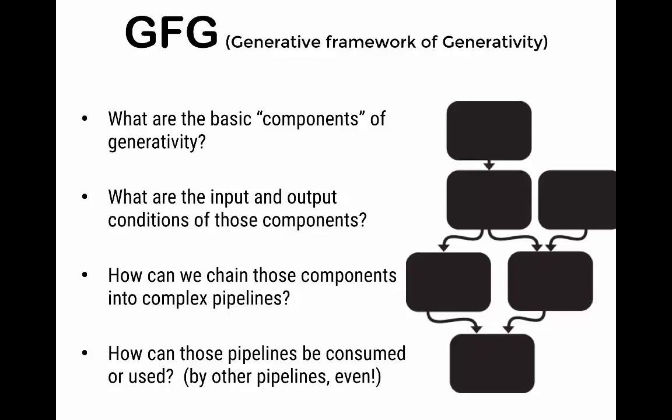So some of the things I was thinking about were what are the basic components of generativity? What are the inputs and output conditions of those components? And then most importantly, how do we chain those components together into complex pipelines? What are the basic LEGO pieces of generativity? And then once we have these pipelines completed, once we have a pipeline that takes one kind of data and turns it into some other generative form of data, how can I take that pipeline and use that pipeline as another part of a generative pipeline?